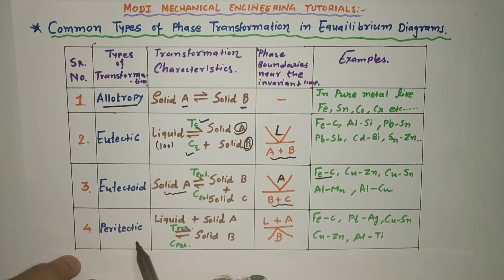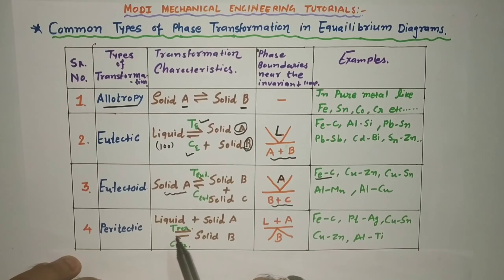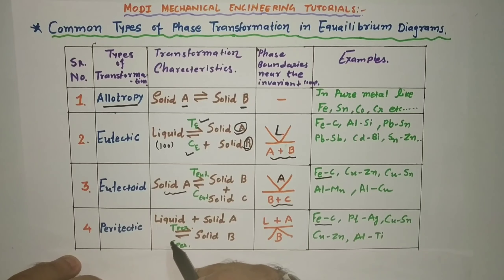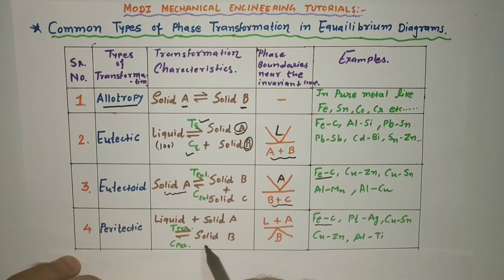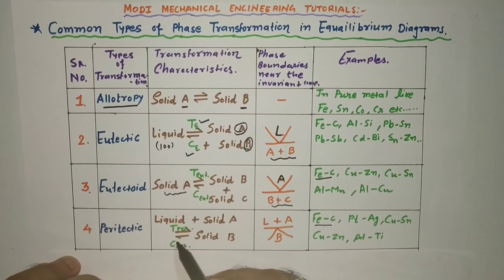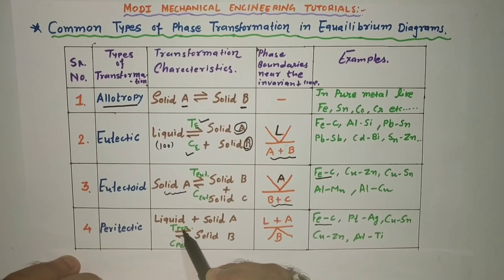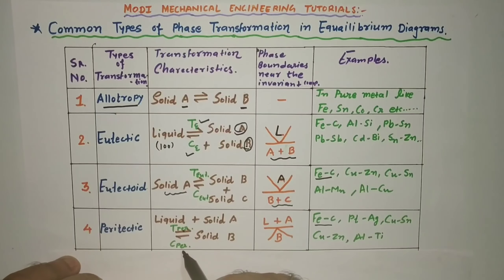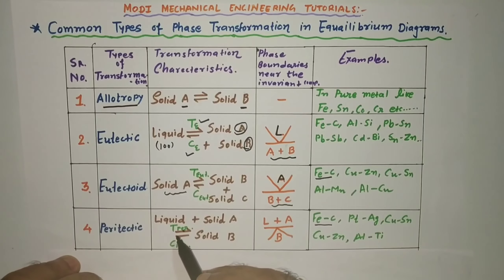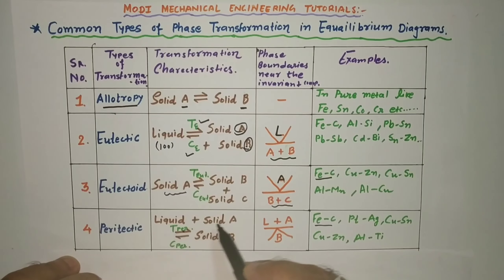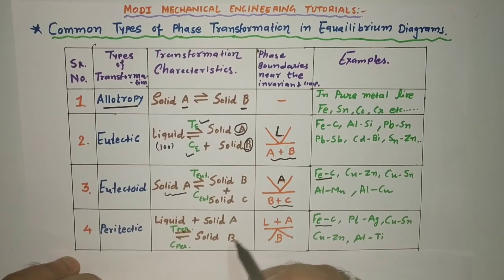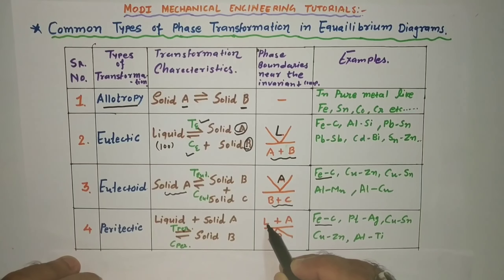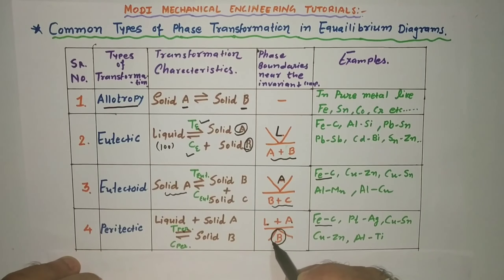The fourth type is peritectic transformation, commonly found in the iron-carbon diagram. In peritectic transformation, liquid plus solid converts into a new solid. It occurs at a specific peritectic temperature and specific composition. Symbolically: liquid + solid → new solid.